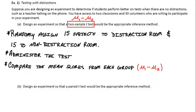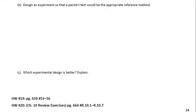Okay, so the next part, part B, is actually probably a little bit better in terms of design. So part B says design an experiment so that a paired T test would be the appropriate inference method.